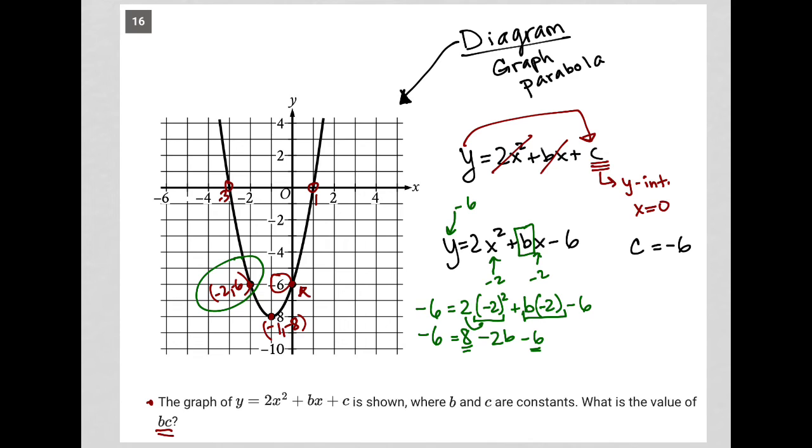8 minus 6 is 2. So it becomes negative 6 equals negative 2b plus 2. I'm going to subtract 2 from both sides. I'm left with negative 8 equals negative 2b. I divide both sides by negative 2, and I end up with b equals positive 4.